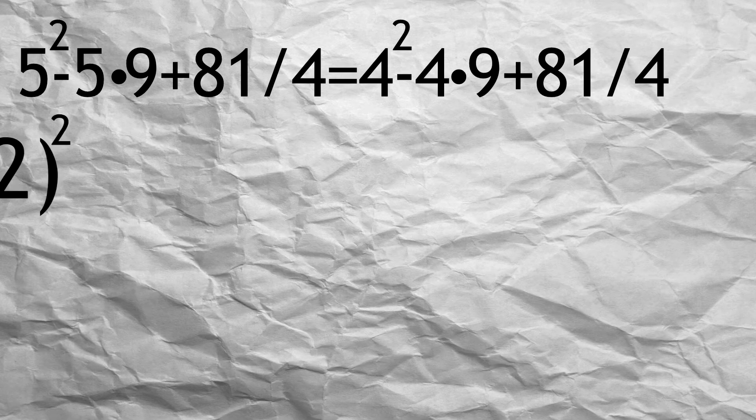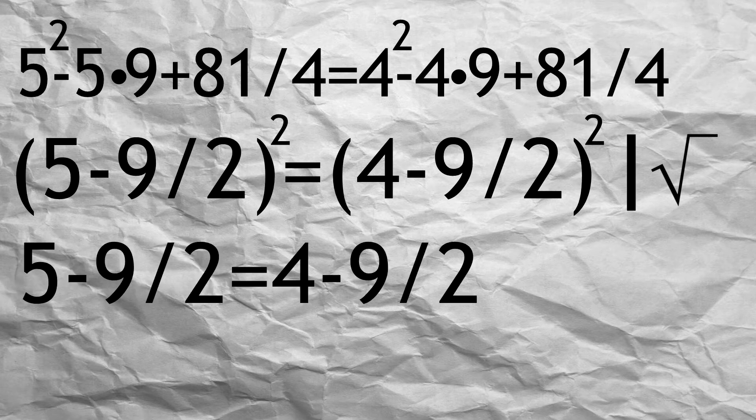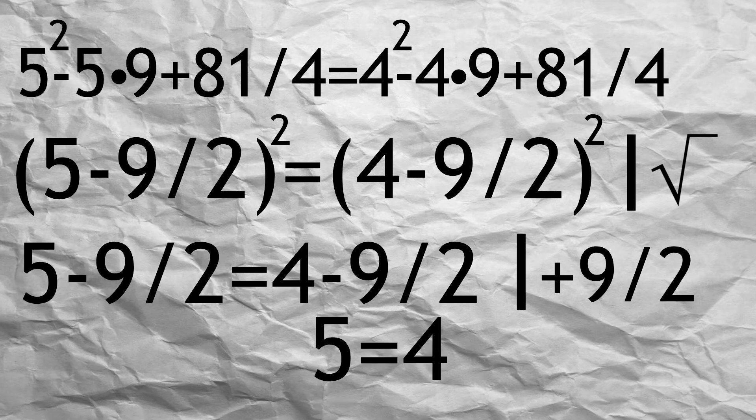Now, these are perfect squares. Take the square root of both sides. Add 9 division 2 on both sides, and 5 equals 4.